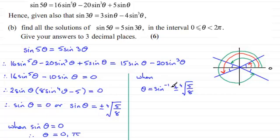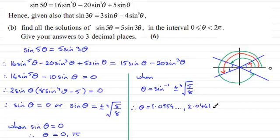Taking inverse sine of the positive fourth root of 5/8, θ = 1.0954 radians — that's the first-quadrant angle. The second-quadrant angle is π minus 1.0954 = 2.0461. By symmetry, π plus 1.0954 gives 4.2370, and 2π minus 1.0954 gives 5.1877 radians.